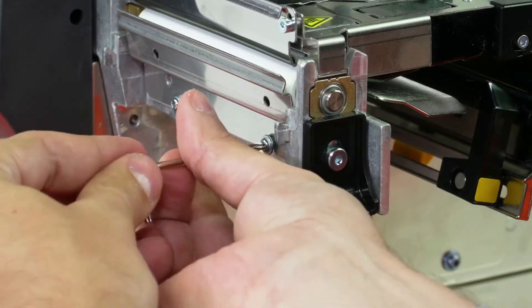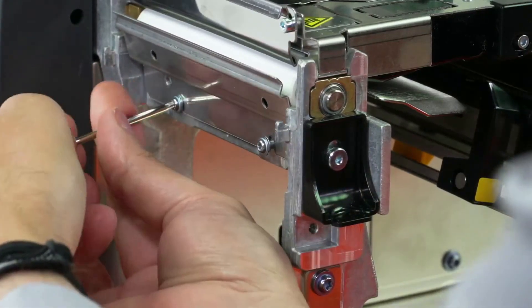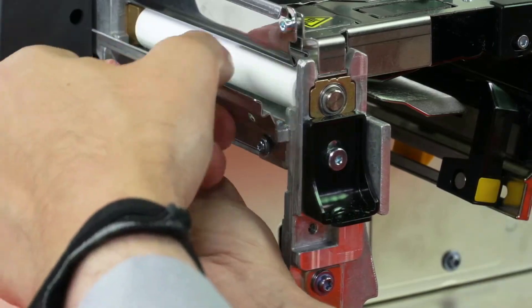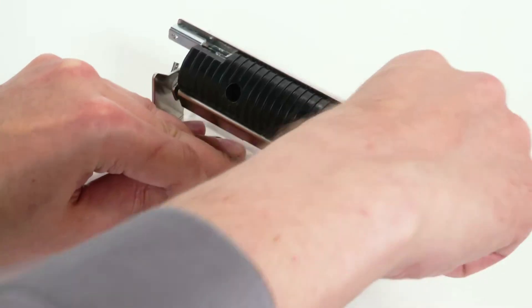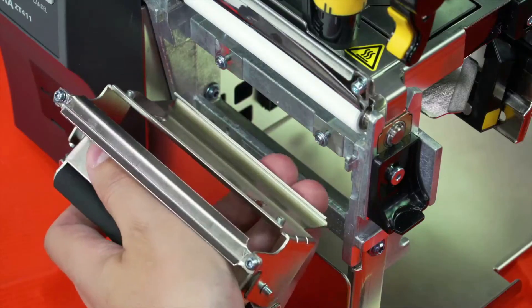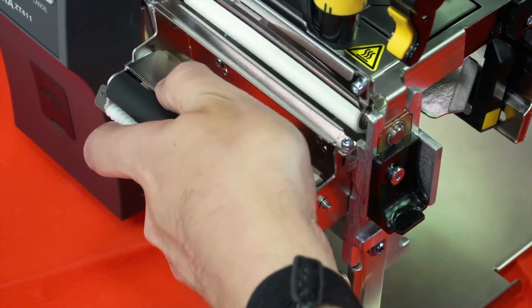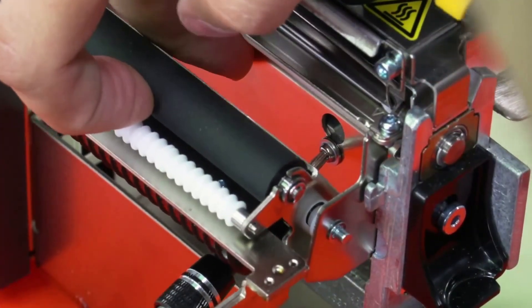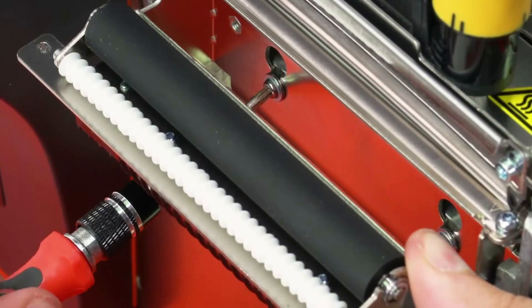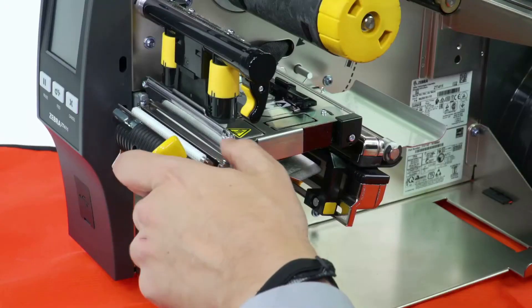Loosen the two mounting screws about a quarter of an inch or seven millimeters. Remove the tear plate. Open the peel roller. Insert peel assembly over the two screws and lift up. Tighten the mounting screws. Close the peel.